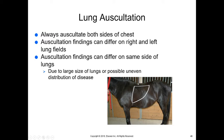For lung auscultation, you'll hear different things on the left and right side because the lungs have different shapes on each side. They're very large, and disease is usually unevenly distributed, so it's important to listen over the entire lung field. The GI tract is listened to further back with a stethoscope.